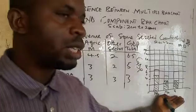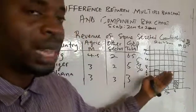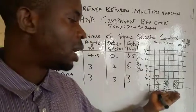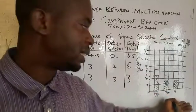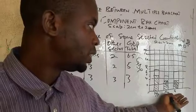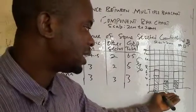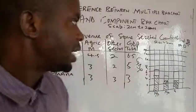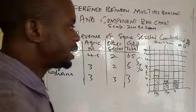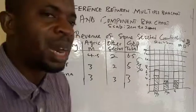Now, where we stopped when we were dealing with the difference between simple bar chart and component bar chart is here. We stopped here. This is the component bar chart and you can see how we drew this. Now let's go to multiple bar charts.